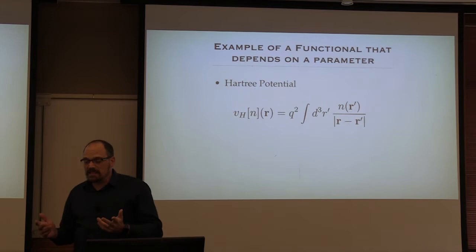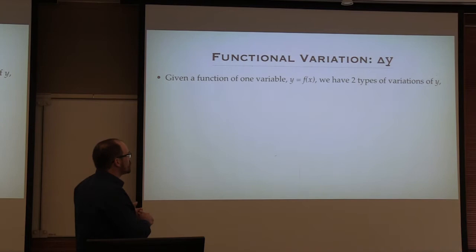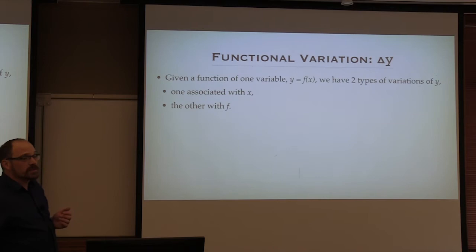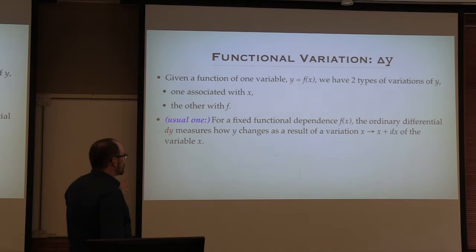Let's look at functional variation and derivatives. If we have a function of one variable, we have two types of variation: the first is when x changes — the usual derivative — and the other is when the function f itself changes. The usual case is a fixed functional dependence f(x) and you calculate df/dx. You just take the limit — that's something you've done since primary school.